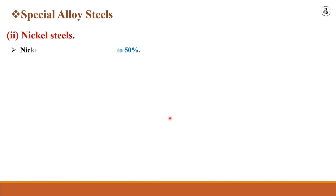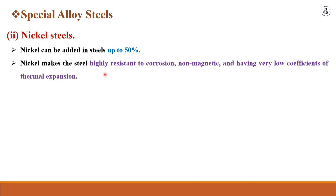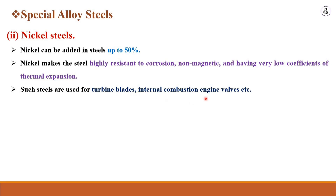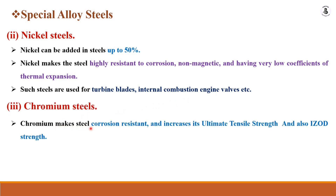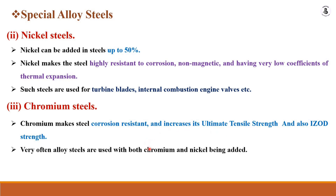Another special alloy steel is nickel steel. Nickel can be added up to 50% and makes the steel highly resistant to corrosion, gives it non-magnetic properties, and a very low coefficient of thermal expansion. Such steels are used for turbine blades and internal combustion engine valves, i.e., high temperature applications. Chromium steel provides corrosion resistance and increases both ultimate strength and isotopic strength. Chromium-nickel steel wires are often used in furnaces, toasters, and heaters.